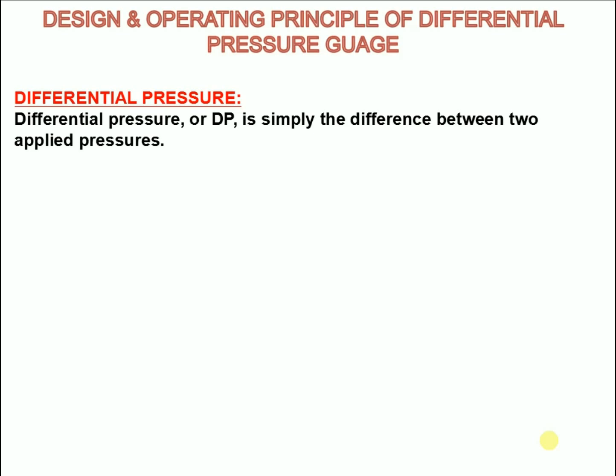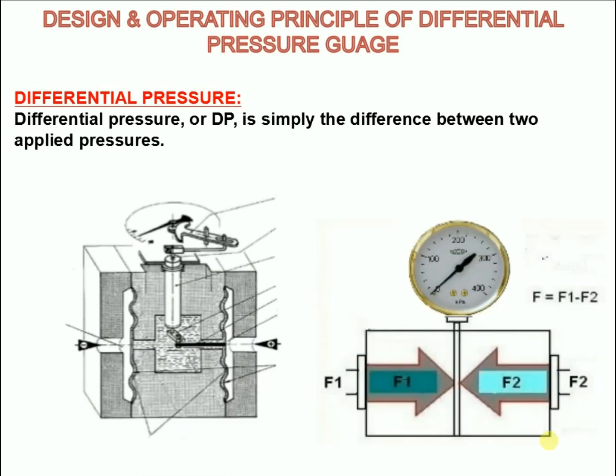A differential pressure gauge is a visual indicator designed to measure the difference between two pressure points within a process system. The gauge usually has two inlet ports that are each connected to the pressure points being monitored.